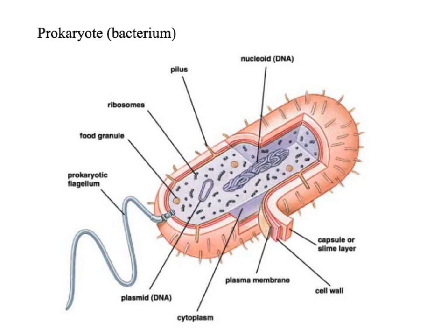And again, like a eukaryotic cell, they've got a plasma membrane. Some, not all, have a flagellum — a tail to help it swim, to propel it through the liquid.